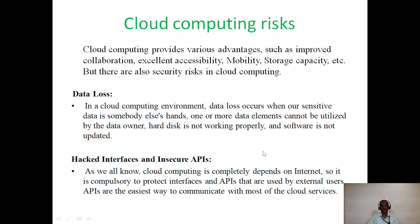The second risk is hacked interfaces or insecure APIs — application program interfaces. As we all know, cloud computing is completely dependent on the internet, so it is compulsory to protect interfaces and APIs that are used by external users. APIs are the easiest way to communicate with most cloud services.